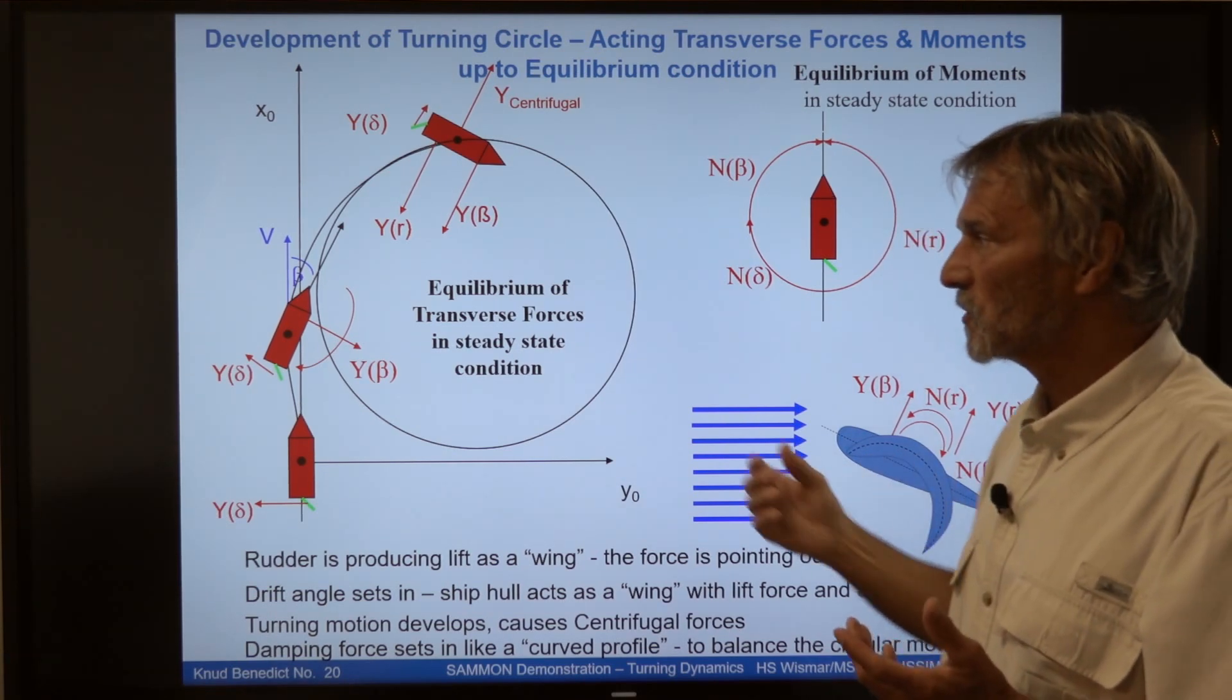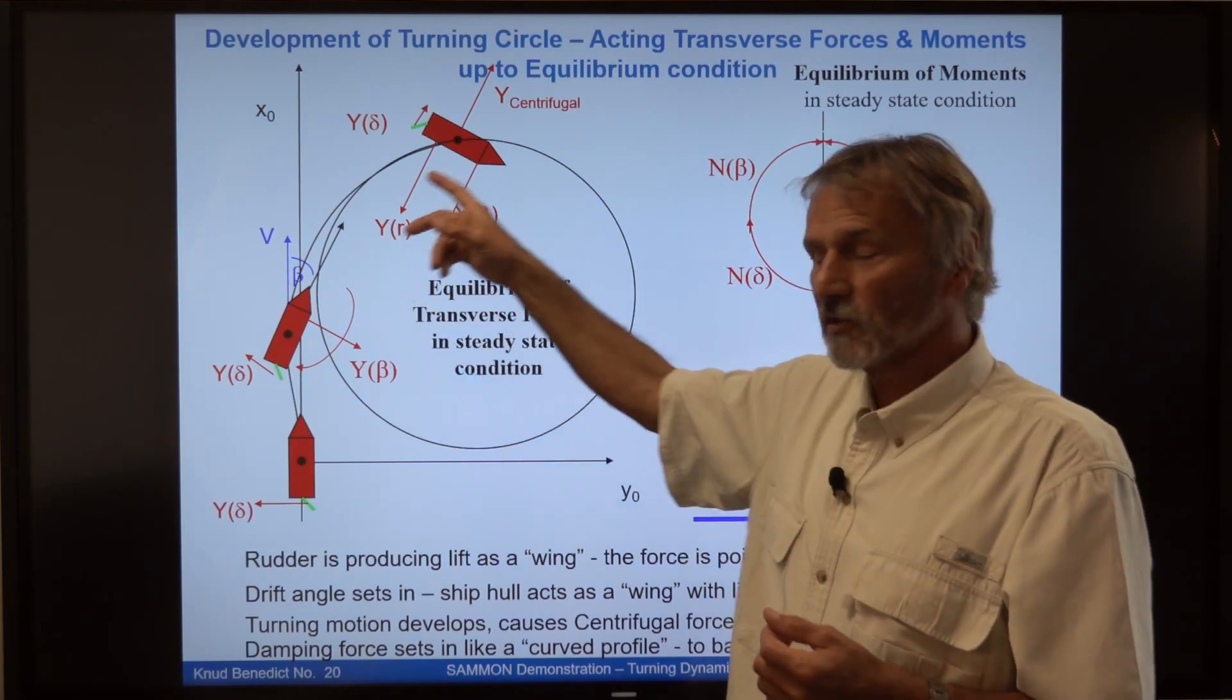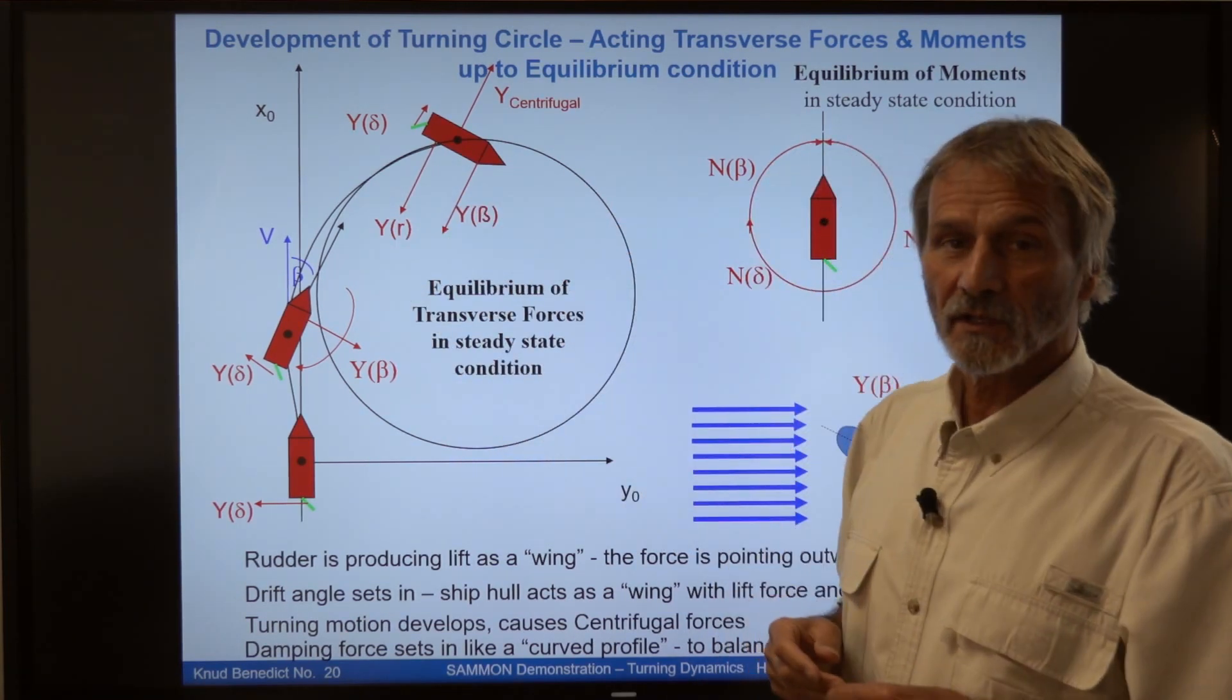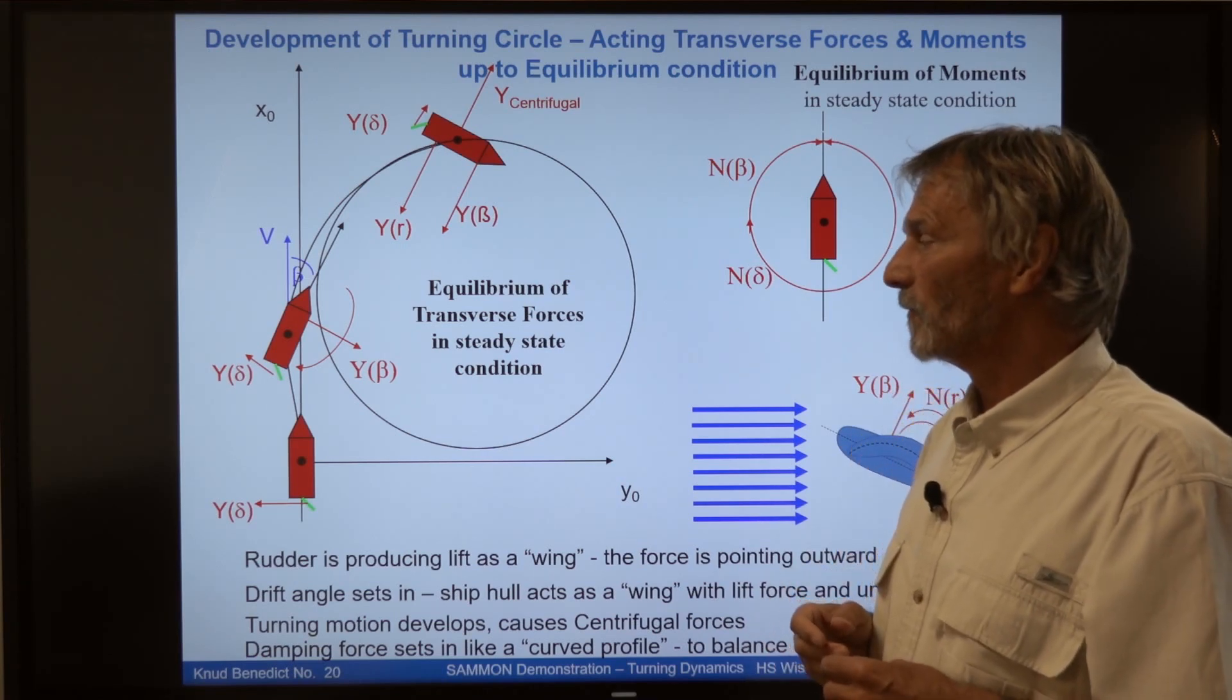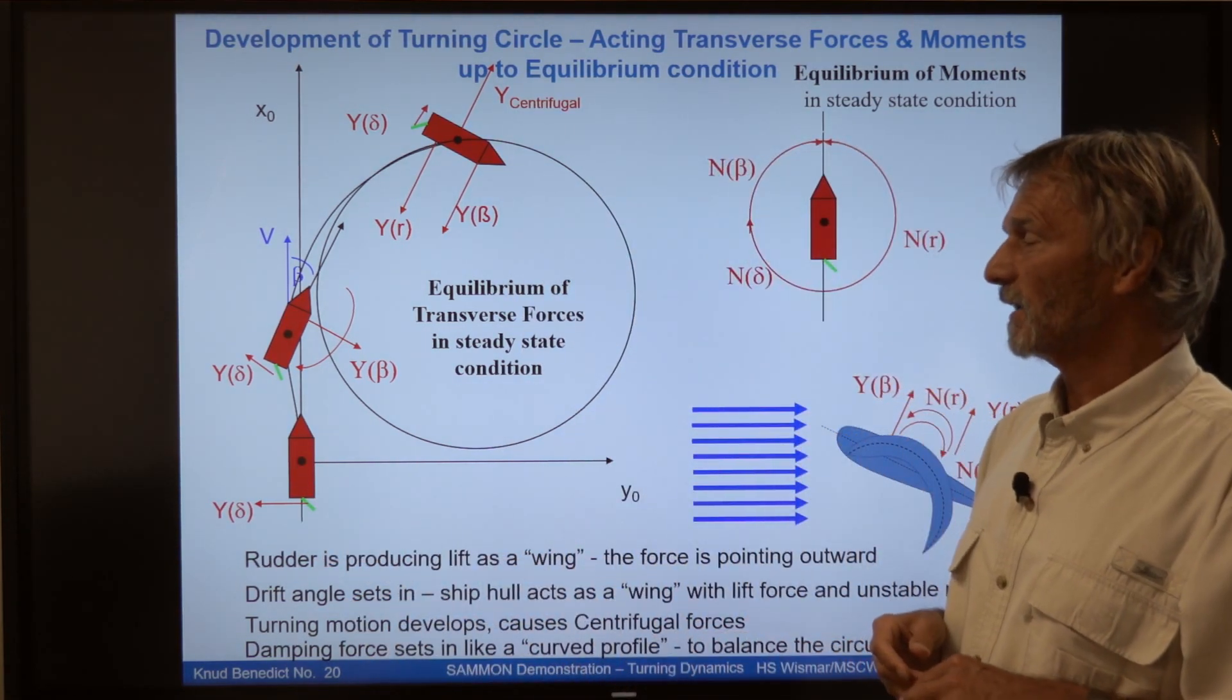And so it comes to a steady state motion, that the ship is turning with constant speed and constant drift angle, rate of turn, if nothing happens except the rudder was set in the beginning.